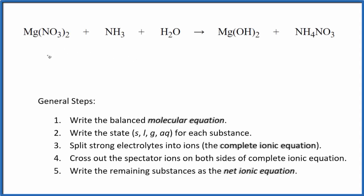Let's write the balanced net ionic equation for Mg(NO3)2 plus NH3 plus H2O. We have magnesium nitrate here and we have ammonia and water. So the first thing we do with net ionic equations, we balance the molecular equation. This is the molecular equation. There's a link in the description how to balance this equation if you need help.